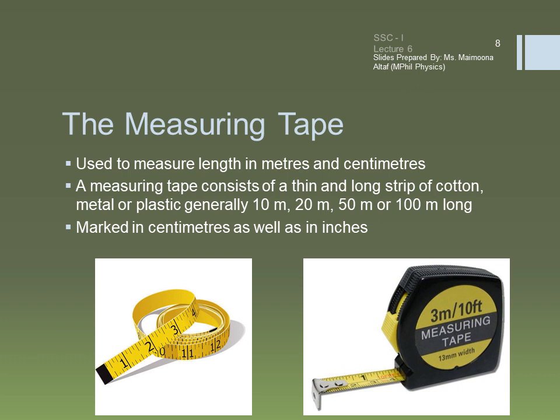A steel tape measure is suitable for measuring straight distances which are longer than a meter. While a cotton tape measure is suitable for measuring length along a curved surface, such as a person's waist. For measurement of an object whose length is less than a meter, we can use a meter rule.